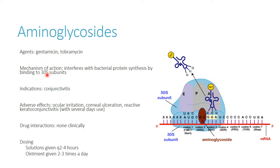We don't use aminoglycosides as frequently because with longer-term use, you can actually develop further conjunctivitis from them. You're treating someone for bacterial conjunctivitis and they end up getting worse — that could be related to this drug. You can also see corneal ulceration develop over time. This is why we don't recommend these as frequently as erythromycin or Polytrim.